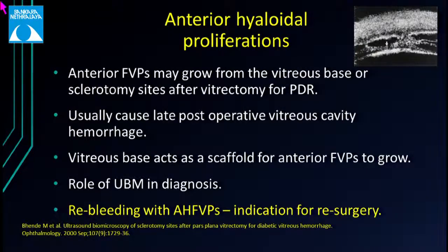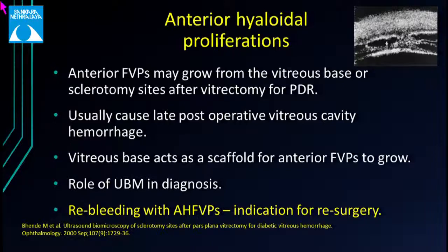We sometimes encounter anterior hyaloidal proliferations — a complication of vitrectomy for PDR — causing late re-bleeding at about six to eight weeks postoperatively. These anterior hyaloidal fibrovascular proliferations can grow from the vitreous base acting as a scaffold, or from the sclerotomy site, commonly referred to as port-site proliferations. UBM has a role in diagnosing this condition, and it is an indication for re-surgery. If re-bleeding occurs along with anterior hyaloidal fibrovascular proliferations on UBM, we should go inside and trim the proliferations to the extent possible.